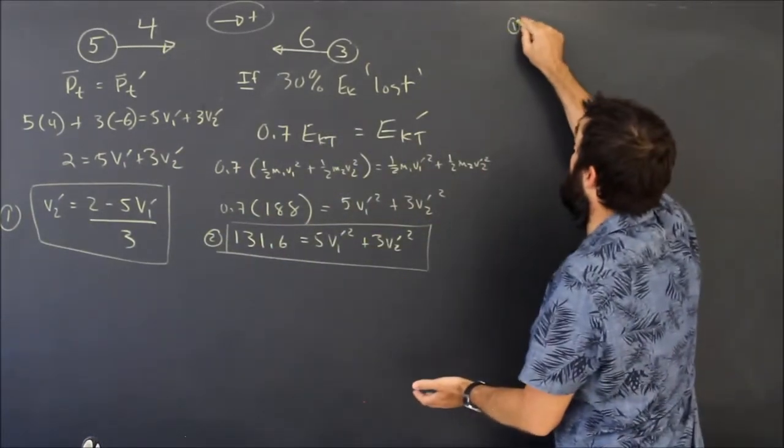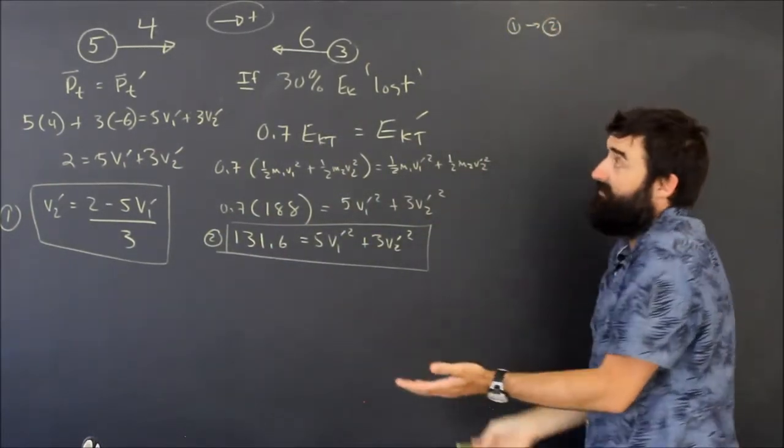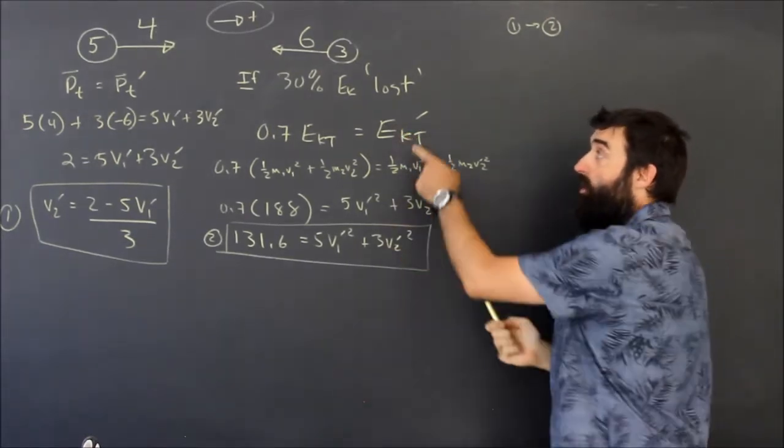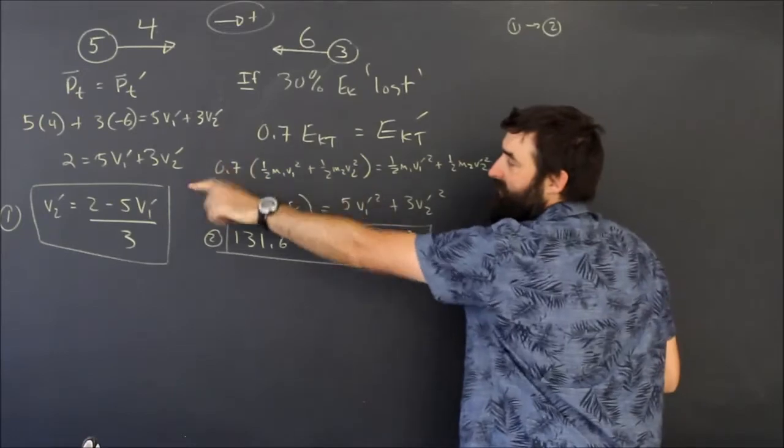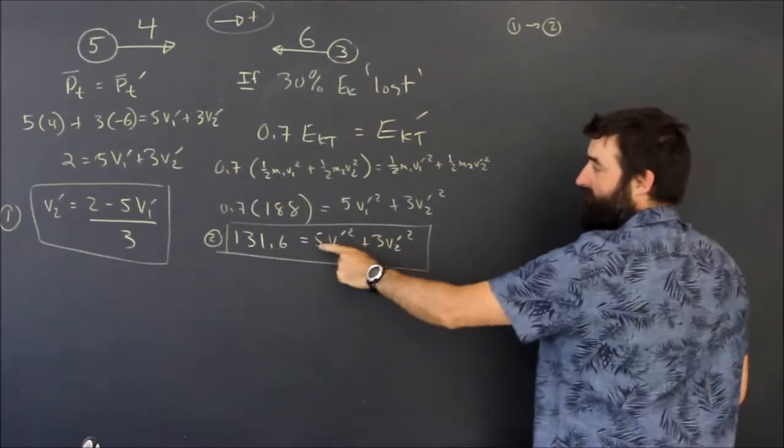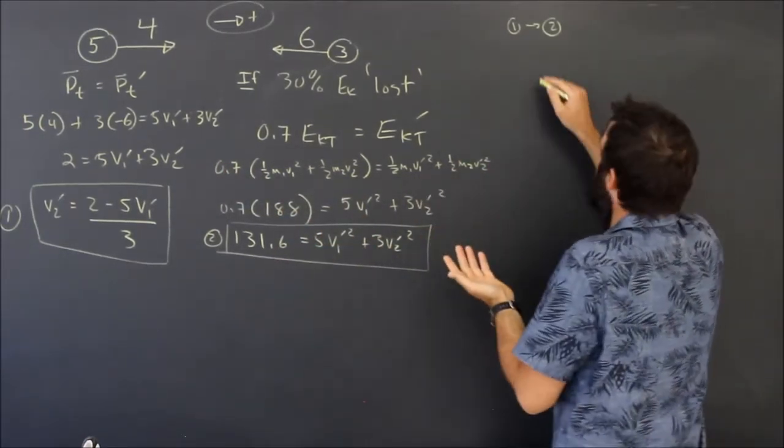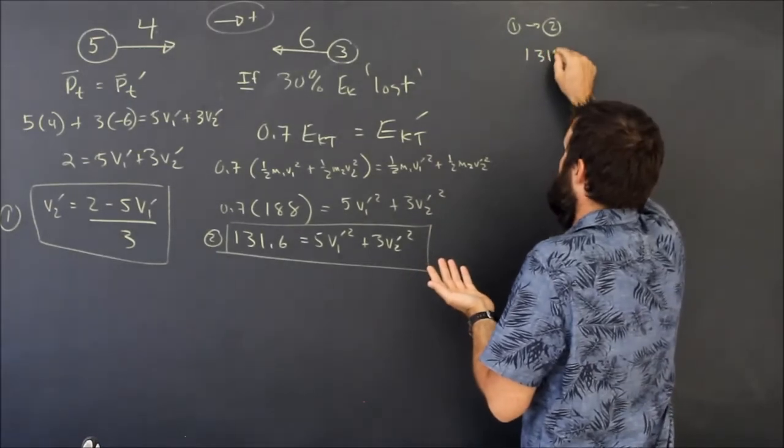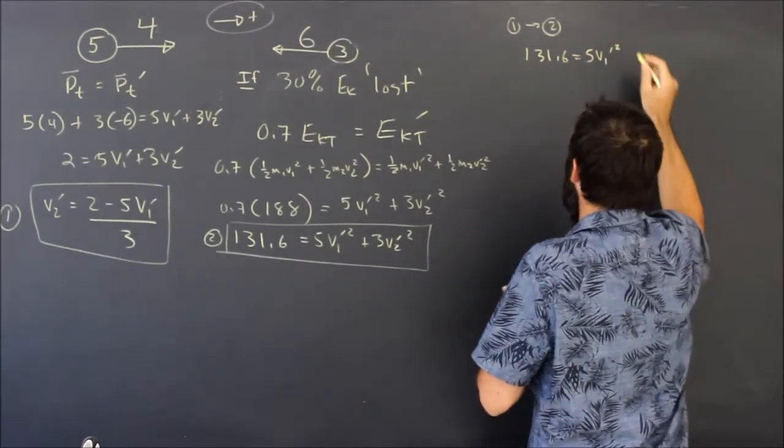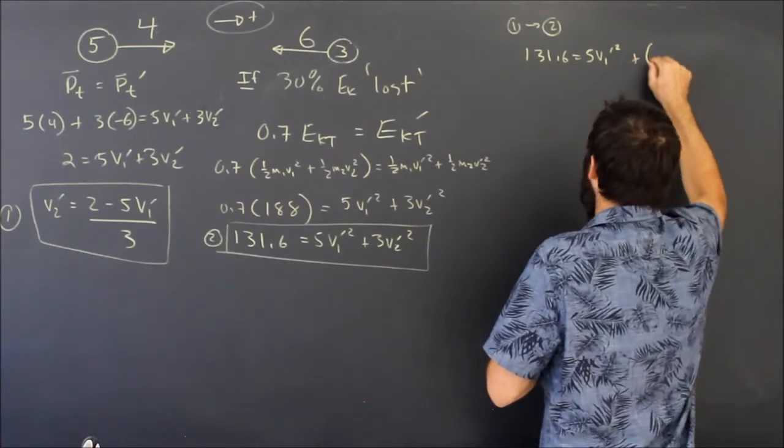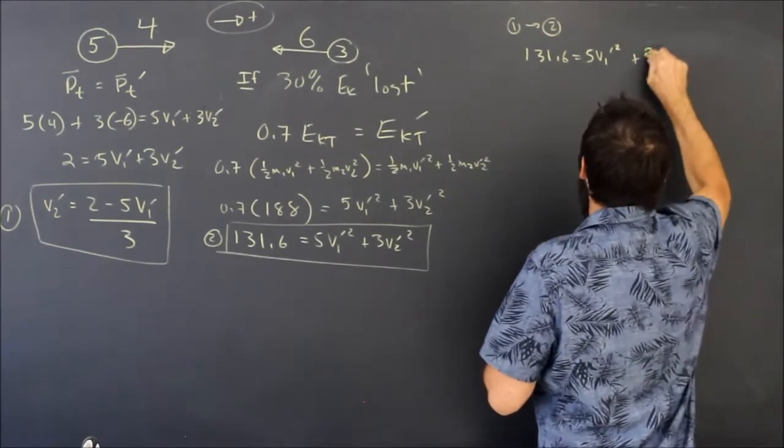And I'm going to follow the exact same method I had before. I'm going to take equation number one, the momentum equation, which hasn't changed because whether it's an elastic collision or if 30% is lost, if it's inelastic, the momentum is still going to be conserved. So two into one, same thing but a new set of numbers.